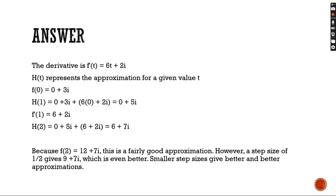h of 1 will equal 0 plus 3i plus 6 times 0 plus 2i, which will yield 0 plus 5i. This makes f prime of 1 to equal 6 plus 2i, and h of 2 to equal 6 plus 7i, which will be our final approximation. Because f of 2 equals 12 plus 7i, this is a fairly good approximation. However, a step size of 1 half gives 9 plus 7i, which is even better. Smaller step sizes will give better and better approximations as the step size approaches 0.